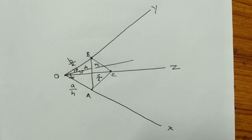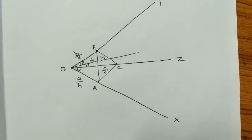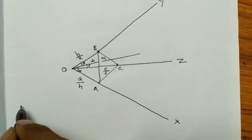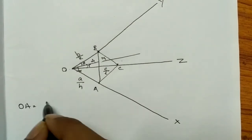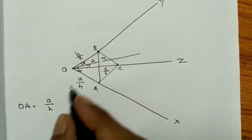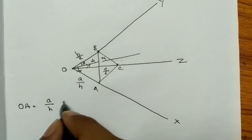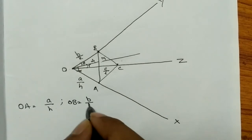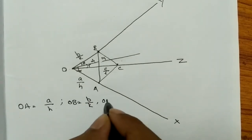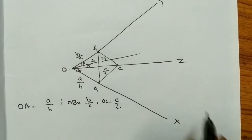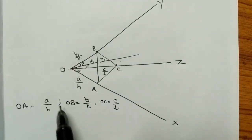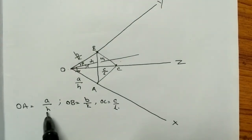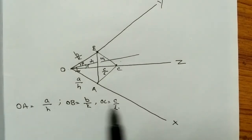This particular axis ON1 makes an angle alpha with the x-axis, beta with the y-axis, and gamma with the z-axis. We have to find the distance from origin to N1, which is d1. From the diagram, OA equals a/h, OB equals b/k, and OC equals c/l.